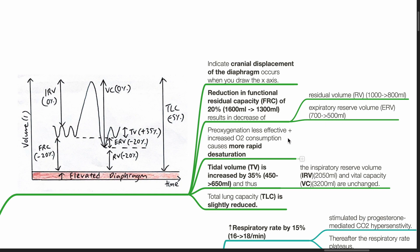Pre-oxygenation is less effective, coupled with increased oxygen consumption, causes more rapid desaturation. Tidal volume is increased by 35% from 450 to 650 mL, and thus the inspiratory reserve volume and vital capacity are unchanged.